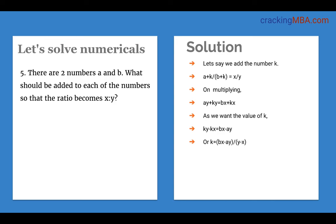For two numbers a and b, what should be added to each so that the ratio becomes x to y? Assume the value to add is k. We add k to both numbers so the ratio becomes (a + k) to (b + k), which equals x to y. We do cross multiplication, generate the equation, and solve for k — that is the value we need to add to each of the numbers a and b to get the ratio x to y.